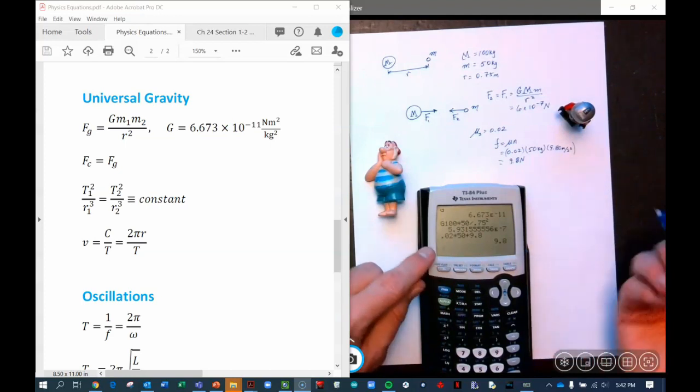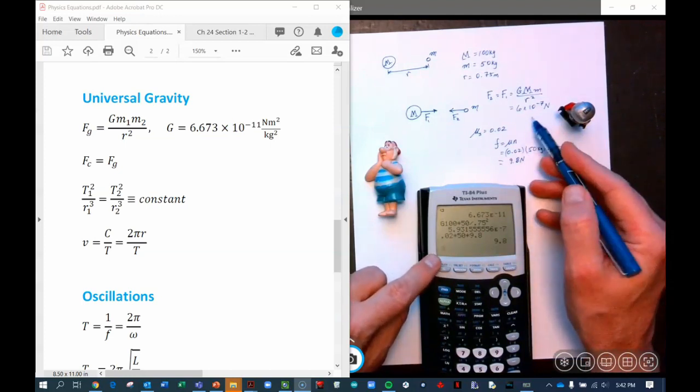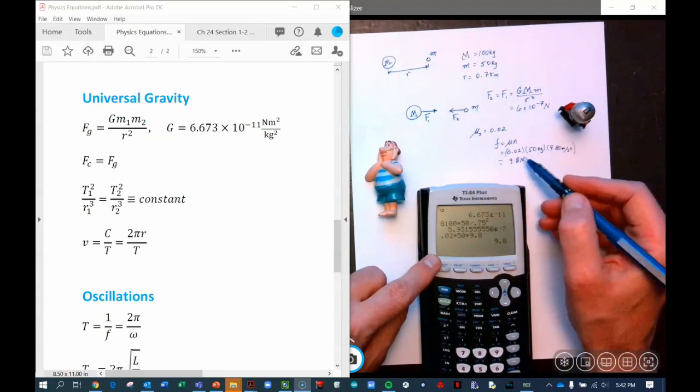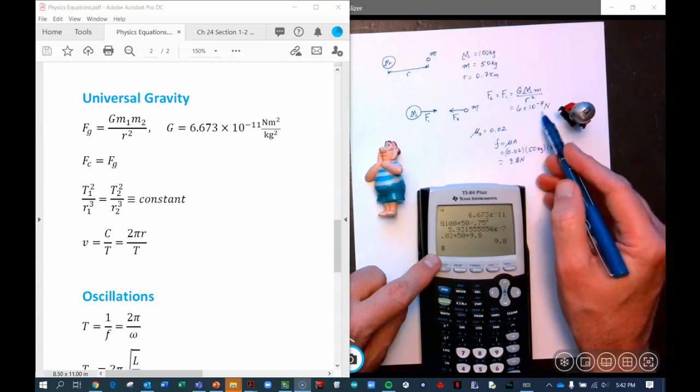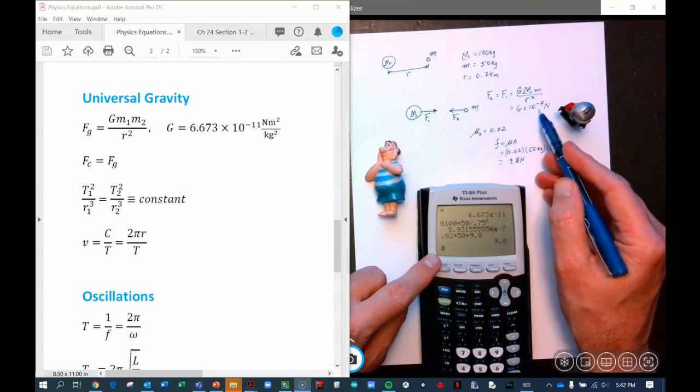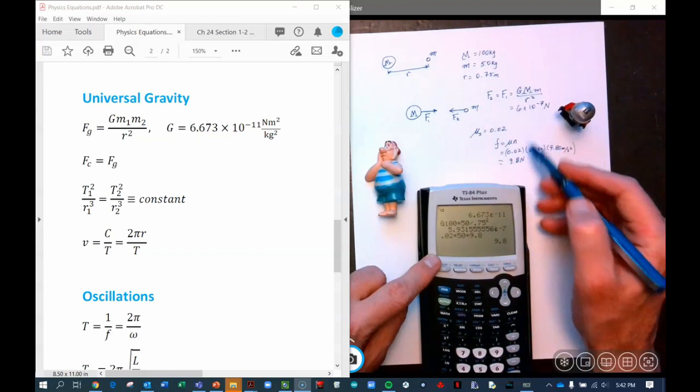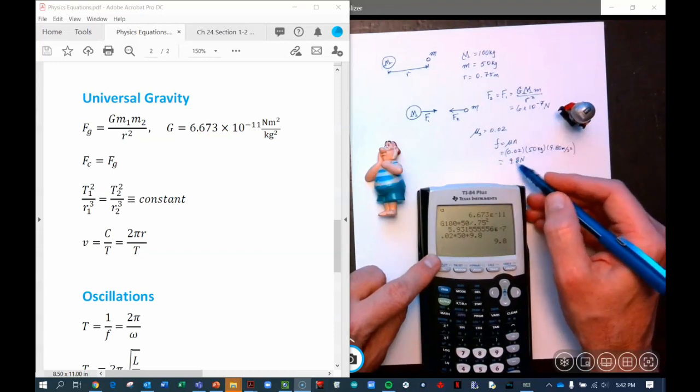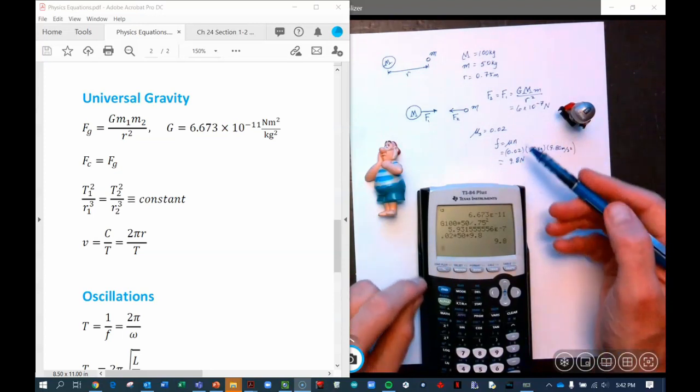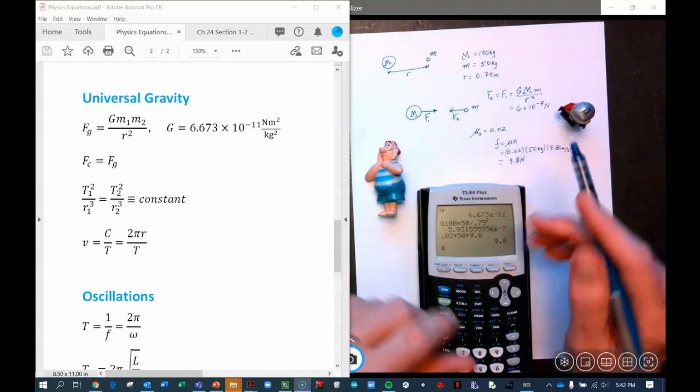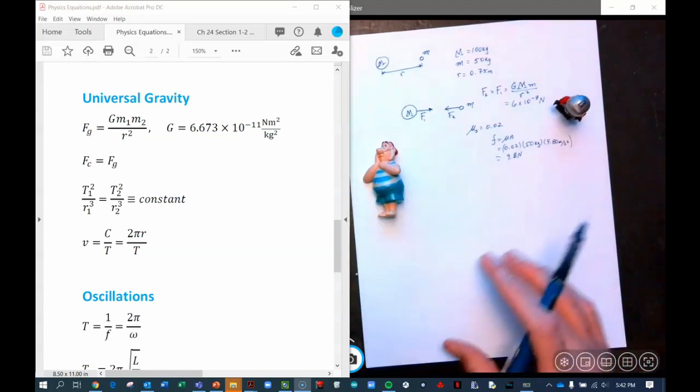And then when we do that calculation, 0.02 times 50 times 9.8, we see that it is a force of 9.8 newtons. And that is quite large compared to that. In fact, it's humongous. This does not mean it's seven times smaller or this is seven times bigger. It means it's seven orders of magnitude bigger. Actually, this is close. This is closer to eight orders of magnitude because this is close to 10. So eight orders of magnitude bigger, which is why gravity, we don't even consider gravity in any of these calculations.